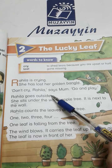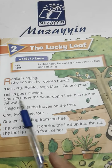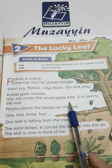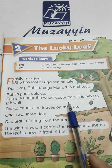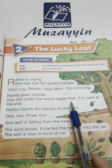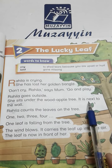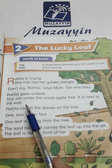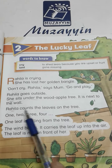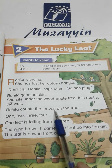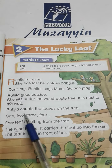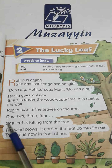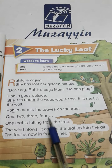Rahila goes outside — Rahila باہر جاتی ہے. She sits under the wood apple tree — وہ سیب کے درخت کے نیچے بیٹھ جاتی ہے. It is next to the wall — جو دیوار کے سے اگلی ہوتی ہے. Rahila counts the leaves on the tree — Rahila جو ہے وہ درخت کے اوپر جو پتے ہیں ان کو گنتی ہے. One, two, three, four.